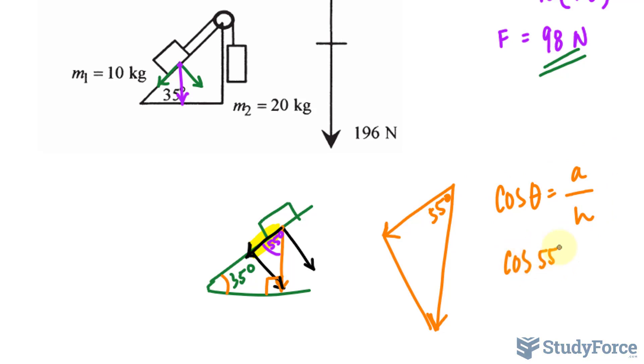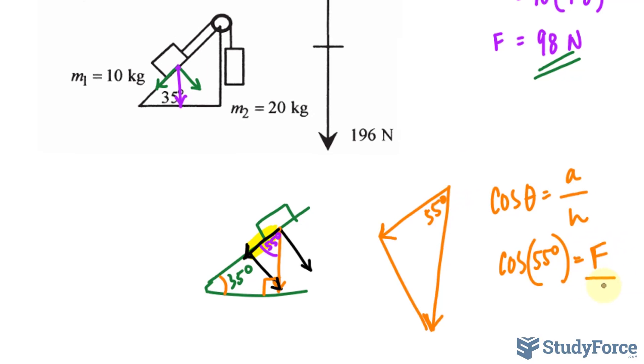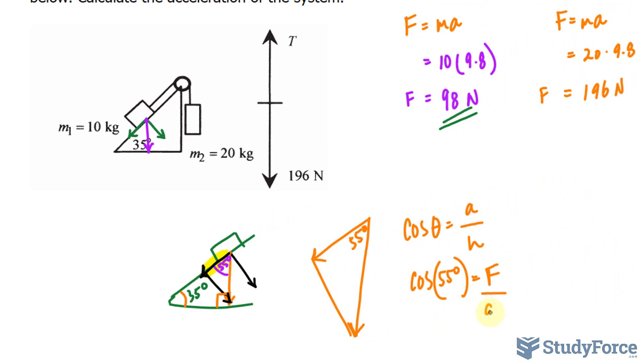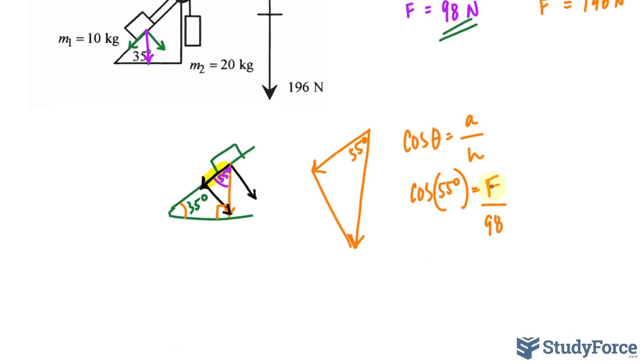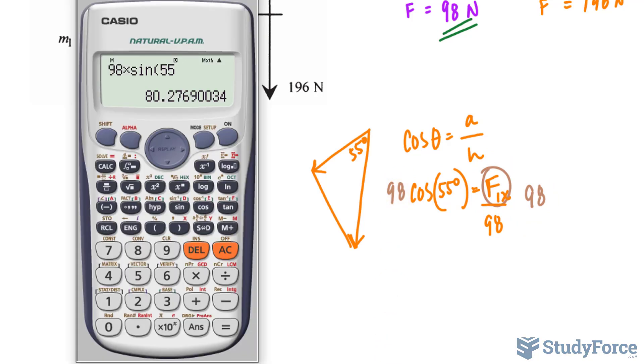I get cosine 55 degrees. The adjacent is what we're looking for, that will represent the force we're trying to find over the hypotenuse, which we found already to be 98. Rearranging for f, I'll write down f sub 1 sub x, so the first force of mass 1 and the x component. Solving for this by multiplying both sides by 98. Let's use our calculator. Make sure your calculator's in degrees. So multiplying 98 by cosine 55, I end up with a force of 56.21.